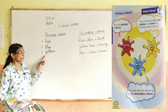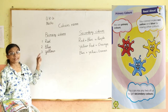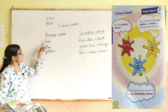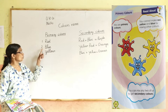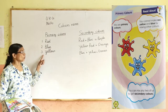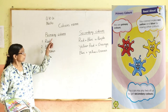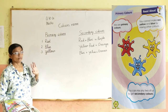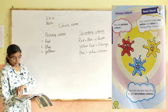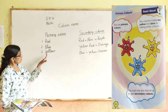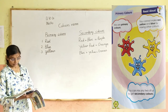What are primary colors? R.E.D. — Red. B.L.U.E. — Blue. Y.E.L.L.O.W. — Yellow. There are three basic colors. If you don't remember the colors, then remember the colors.